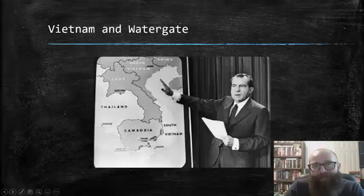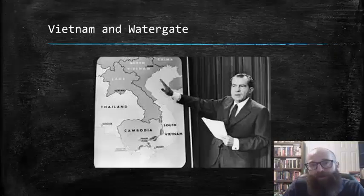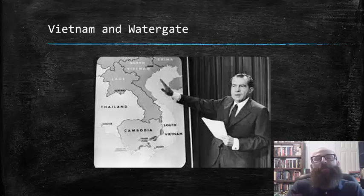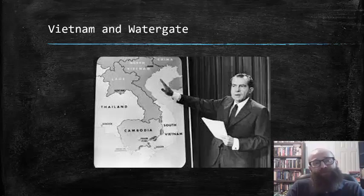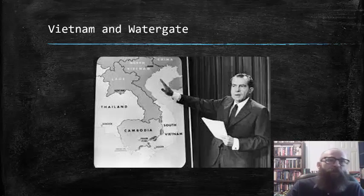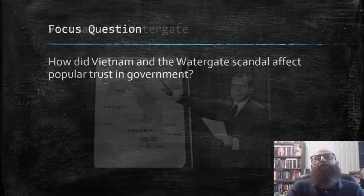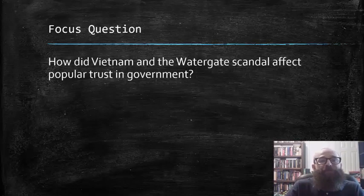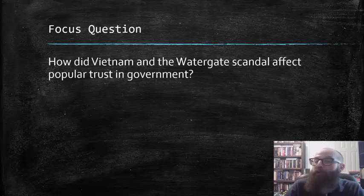Hello and welcome back, gang. This is part two of our lecture series for chapter 26 in your textbook, Give Me Liberty, by Dr. Eric Foner. This section is entitled Vietnam and Watergate. The focus question for this section is: how did Vietnam and the Watergate scandal affect popular trust in government?